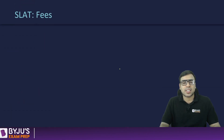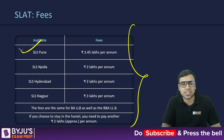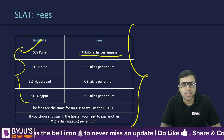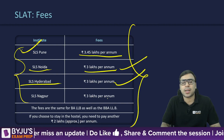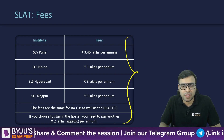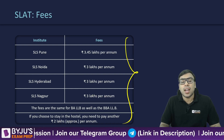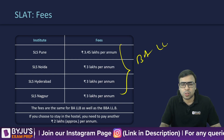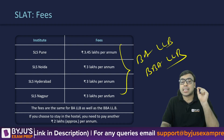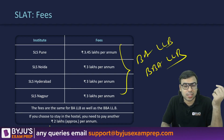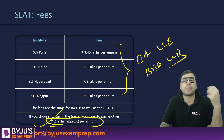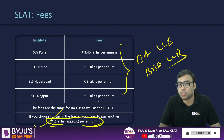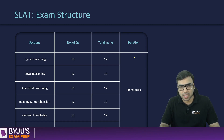Regarding college fees: SLS Pune, considered the best among the four, charges approximately ₹3.4 lakh per year; SLS Noida, SLS Hyderabad, and SLS Nagpur each charge approximately ₹3 lakh per year. These fees are similar for both BLLB and BBALLB programs. Note that hostel fees are additional — approximately ₹2 lakh per year if you opt for hostel accommodation.